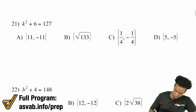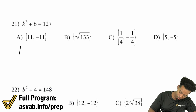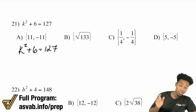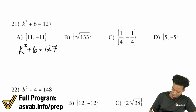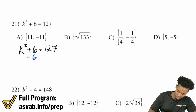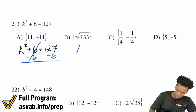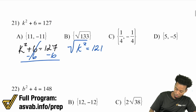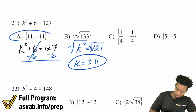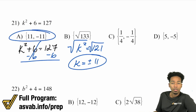Number 21: we have k squared plus 6 equals 127. Subtract 6 on both sides to get k squared equals 121. Take the square root of both sides and you get k equals positive or negative 11.